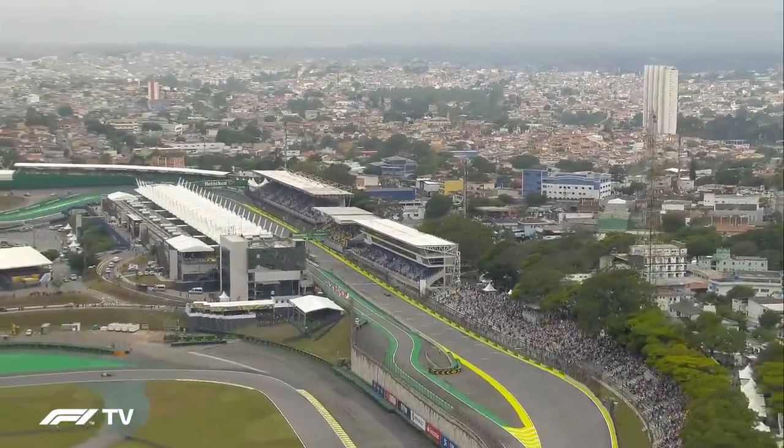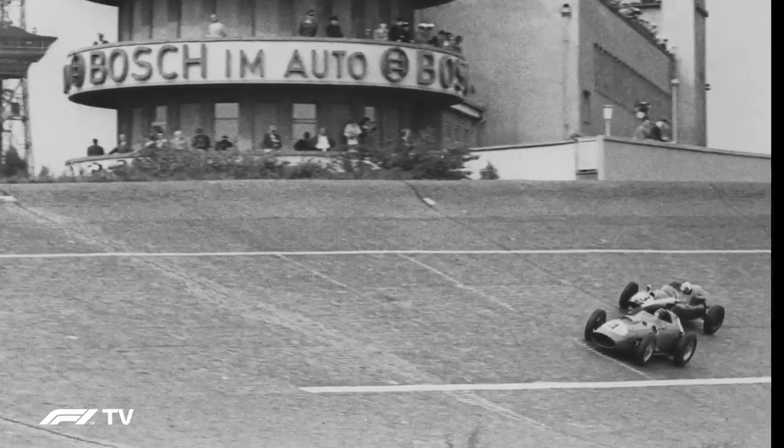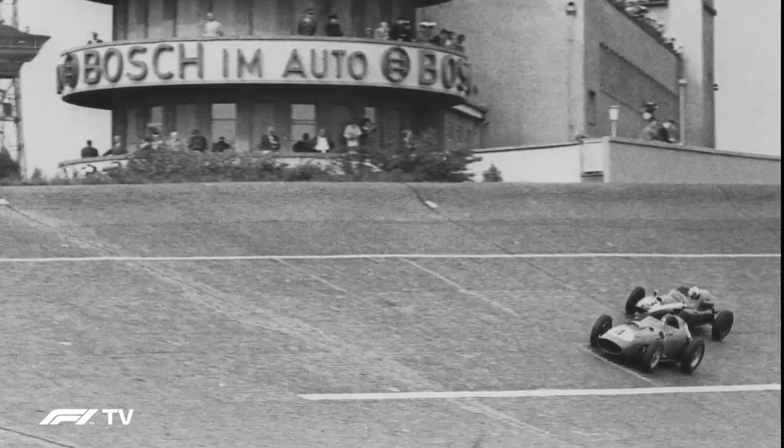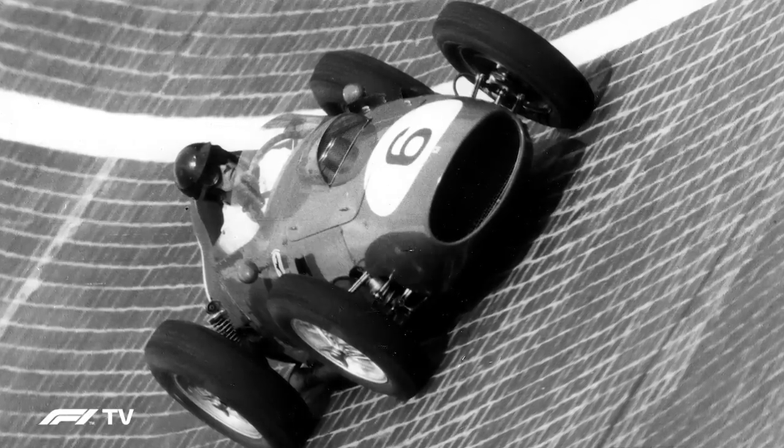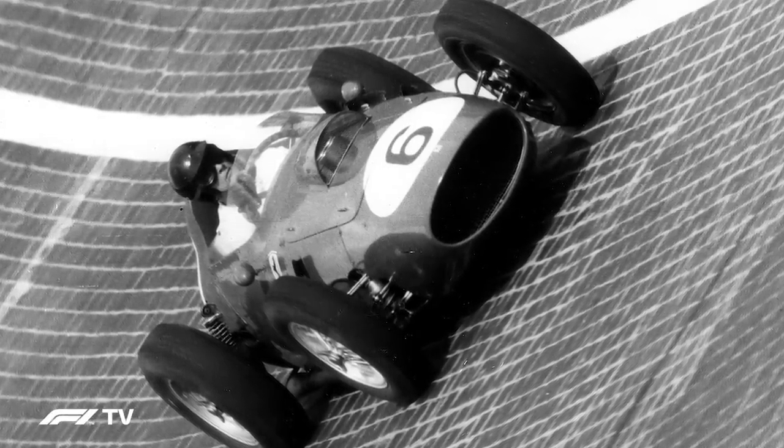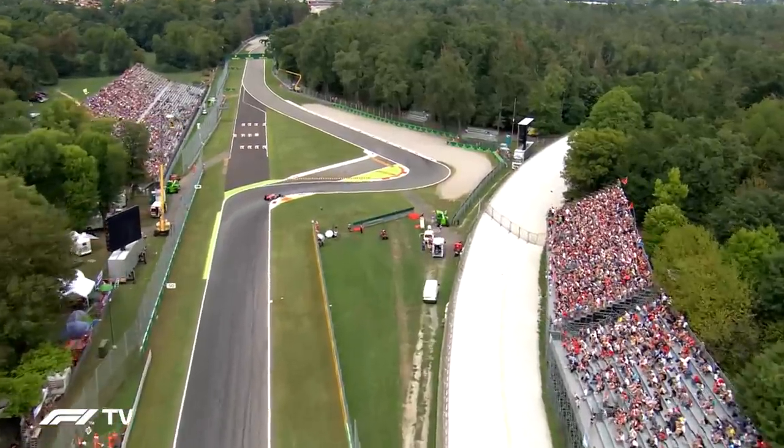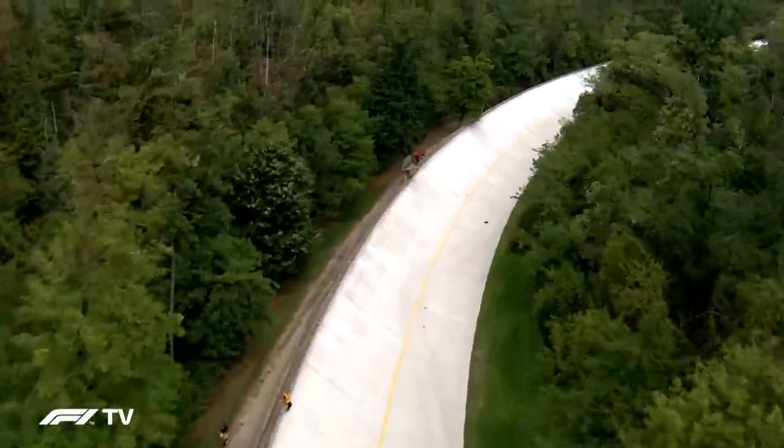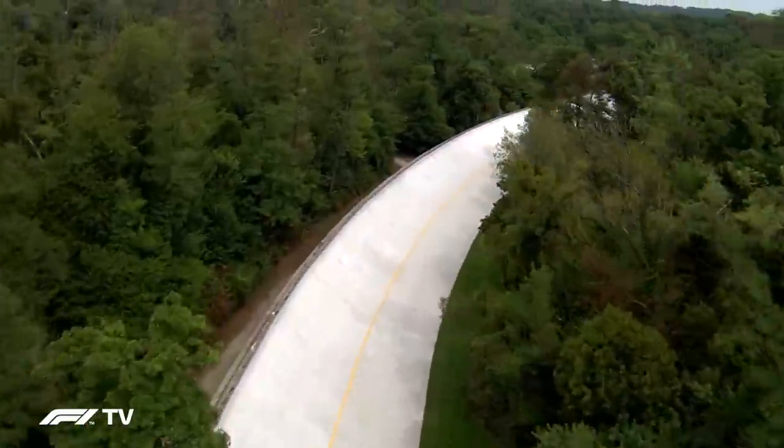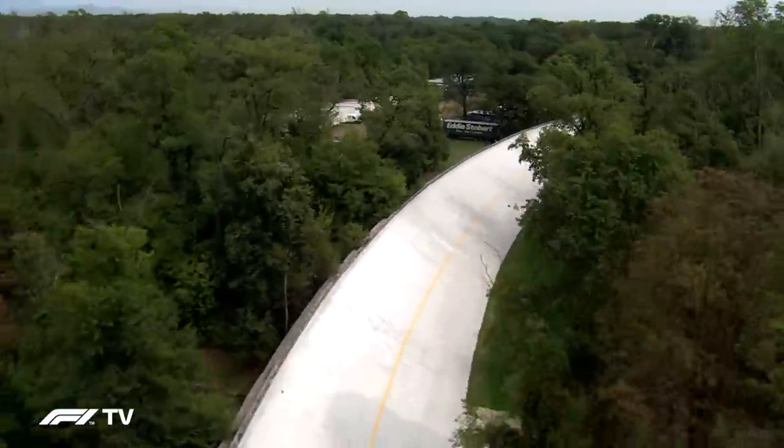And we've seen some much bigger bankings over the years, such as that at the Automobil Werkers und Ubungstrasse, or the AVUS for short, in Berlin, that super steep banking that was used just a couple of times in the World Championship. Then of course, there's the granddaddy of them all, the Monza banking, still there, off in the woods, no longer used for motor racing, but occasionally used for rallying.